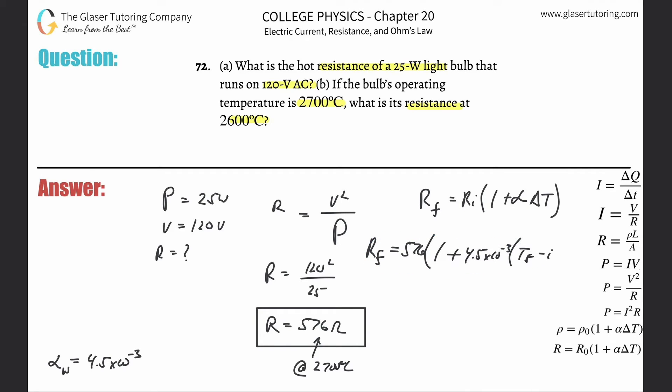Remember temperature change is always final minus initial. So the final temperature here, how I'm framing it, is the 2600. The initial then is 2700.